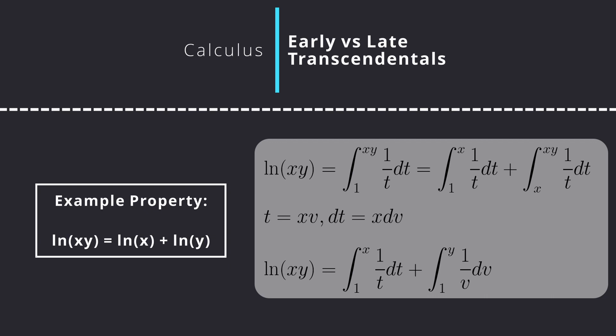Then, by providing a substitution t = v/x, this changes our second integral from the integral from x to xy of 1 over t dt to the integral from 1 to y of 1 over (x times v) multiplied by x dv, and that cancels out to give us the integral from 1 to y of 1 over v dv, which when we simplify all of it, gives us ln x + ln y.